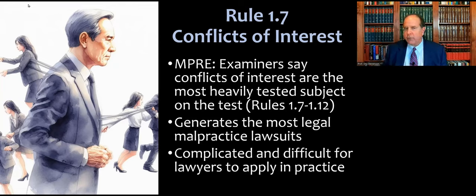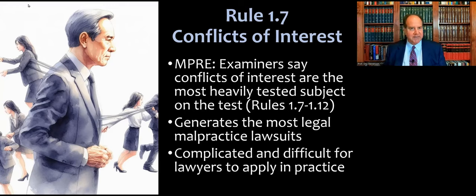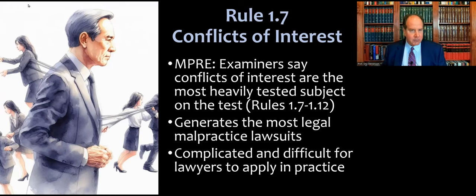There are going to be several rules about conflicts: 1.7, 1.8, all the way to 1.12. But 1.7 is the big rule — the one that the ABA has written the most comments for and that you are most likely to encounter in test questions. So this is where we're going to start.